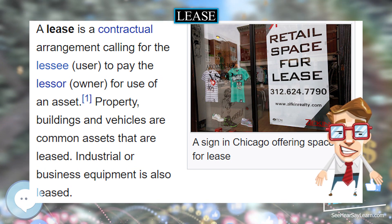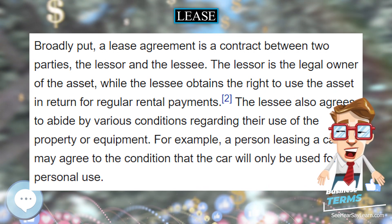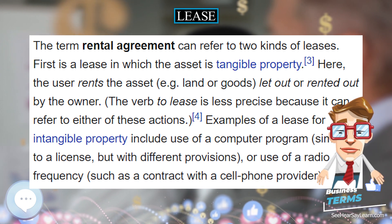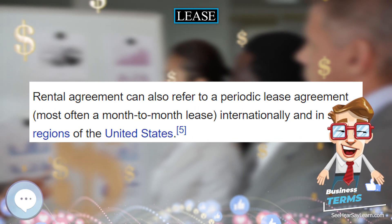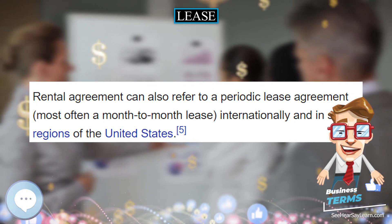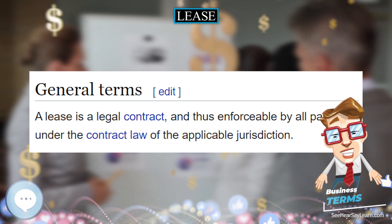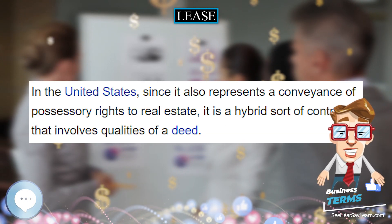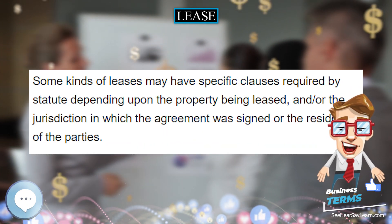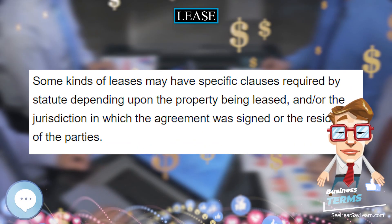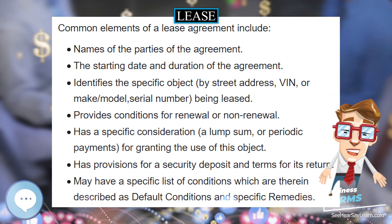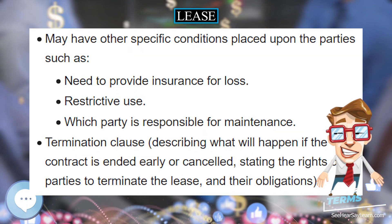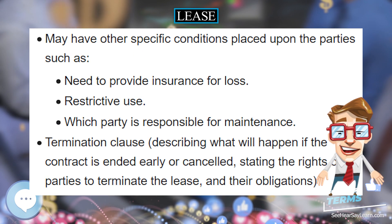Formalities. Formal requirements for a lease are determined by the law and custom of the jurisdiction in which real property is located. In the case of personal property, it is determined by the law and custom of the jurisdiction in which the rental agreement is made. A tenancy for a duration greater than one year must be in writing in order to satisfy the statute of frauds. The term of the lease may be fixed, periodic, or of indefinite duration. If it is for a specified period of time, the term ends automatically when the period expires, and no notice needs to be given in the absence of legal requirements.